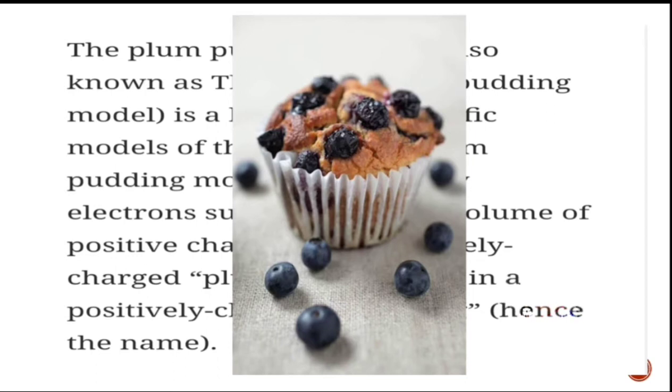The plum pudding is an English dessert similar to a blueberry muffin. In Thompson's plum pudding model of the atom, the electrons were embedded in a uniform sphere of positive charge like blueberries stuck into a muffin. Hence the model got its name, the plum pudding model.